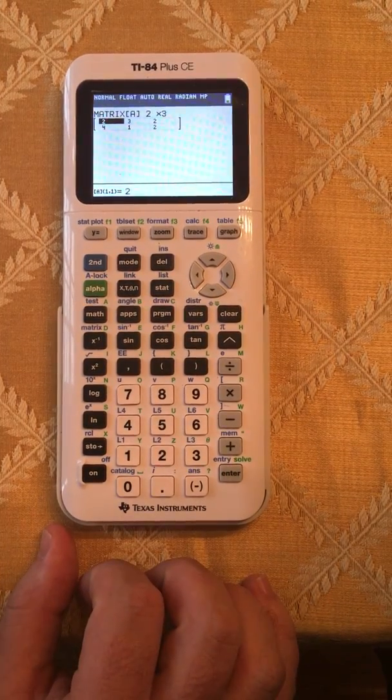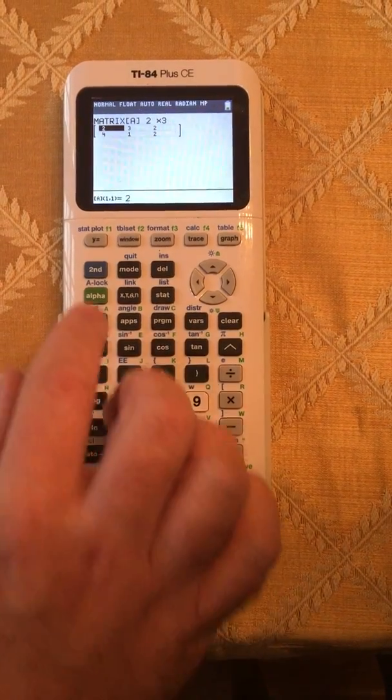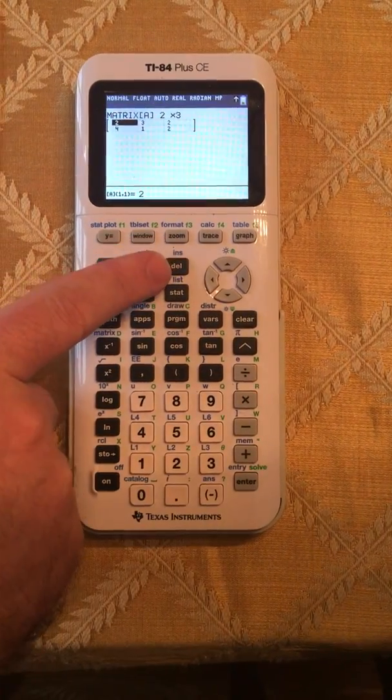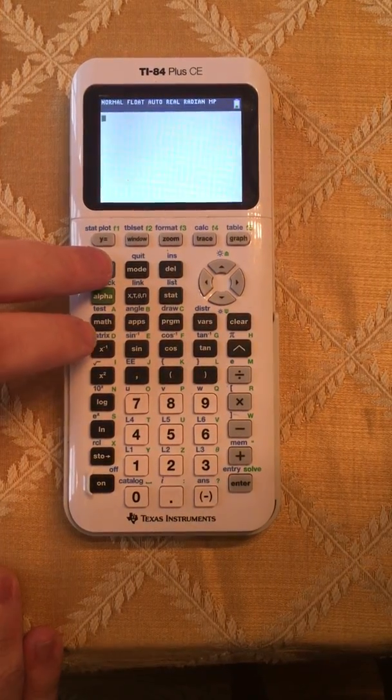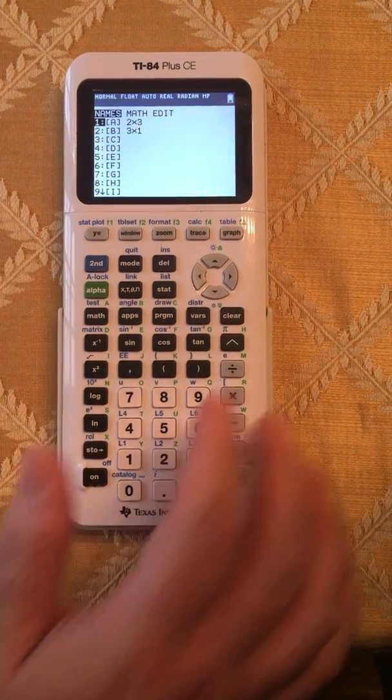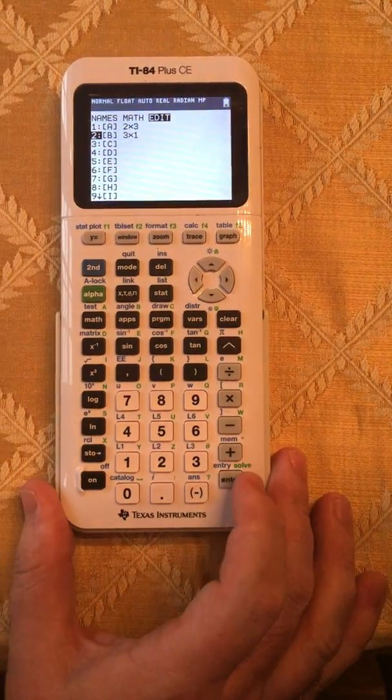After you successfully enter the entire first matrix, then you can hit second quit up the top, second and then quit right next to it. Then you have to do the whole process over again and hit second matrix edit, and this time we will hit down and edit B.